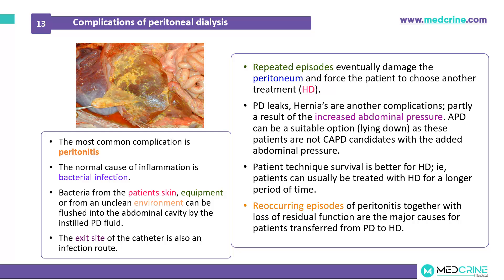Peritoneal dialysis leaks and hernias are common complications, partly as a result of increased abdominal pressure. APD can be a suitable option for these patients, as they may be lying down and are not CAPD candidates due to the added abdominal pressure. Patient technique survival is better for hemodialysis; patients can usually be treated with hemodialysis for a longer period of time compared to peritoneal dialysis. Recurring episodes of peritonitis together with loss of peritoneal function are the major causes for patients to be transferred from peritoneal dialysis to hemodialysis.